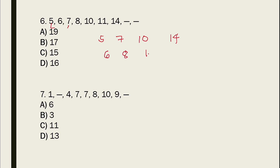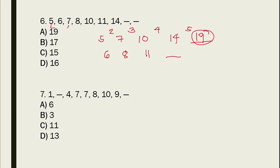In the first sub-sequence, 5 plus 2 equals 7, plus 3 equals 10, plus 4 equals 14 — the interval increases by 1 each time. So the next step is plus 5, making it 19. So the first unknown is 19, which is letter A.